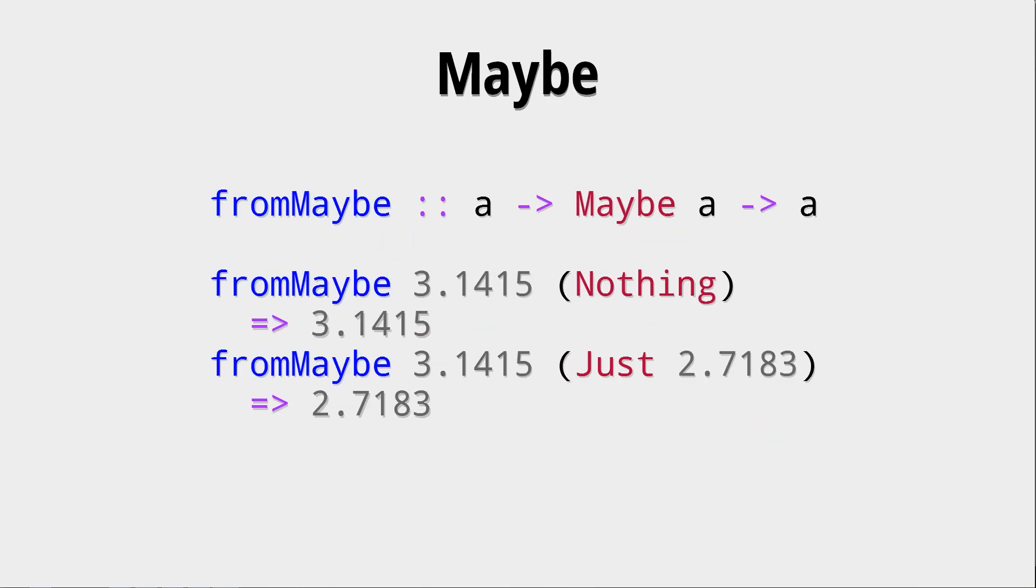The question might be how we return a Maybe to its polymorphic type. We could write our own conversion functions for that, but it's more sensible to use fromMaybe, which as its first argument gets a default value and then the Maybe. So with partial function application, we can create functions that have different default values.